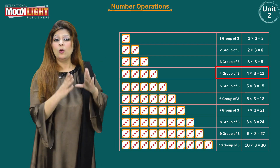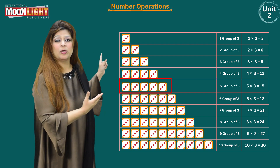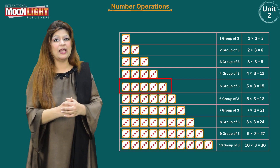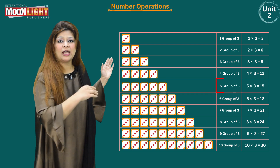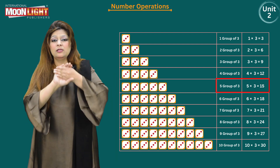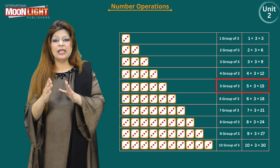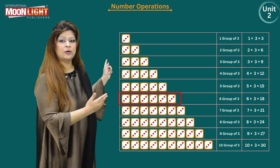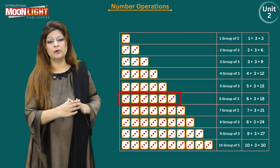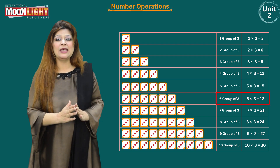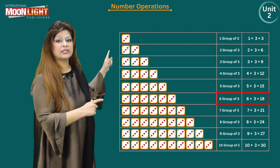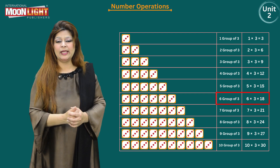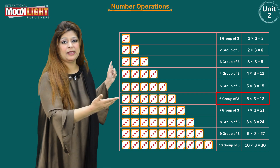Five groups of three: five multiplied by three is equals to fifteen. Six groups of three means the number three is added six times. If you count all the dots together you will get eighteen, so six multiplied by three is equals to eighteen.